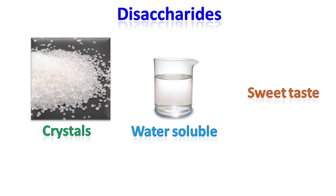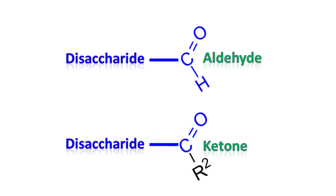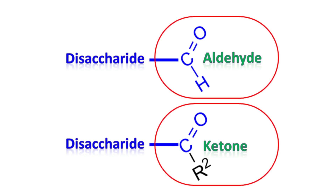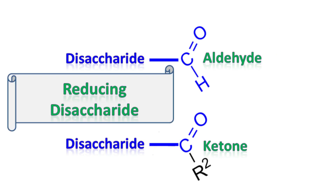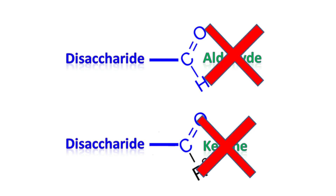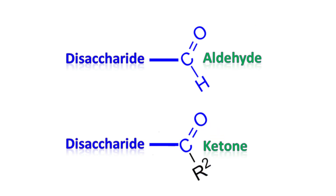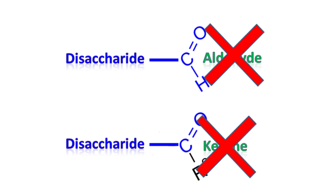If the disaccharide has a free aldehyde or keto group, then it is known as a reducing disaccharide. Examples are maltose and lactose. If the disaccharide does not have a free aldehyde or keto group, then it is known as a non-reducing disaccharide.